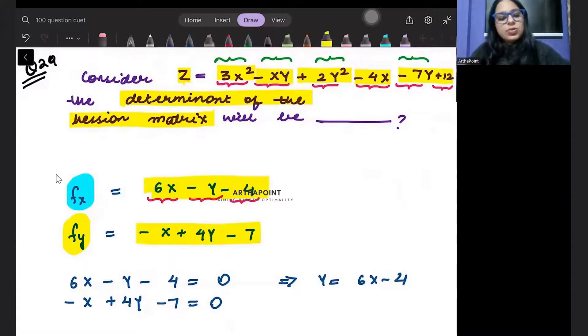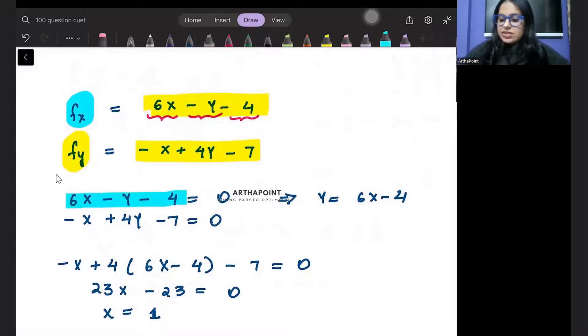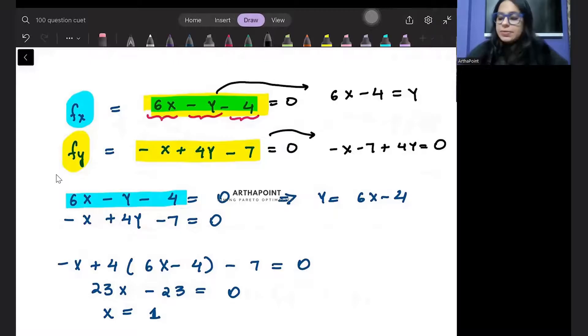Now there are two equations, two variables. So we must solve them simultaneously. From the first equation, 6x minus y minus 4, but a first order derivative we equate to 0 for maximum minima. So from here, I will get 6x minus 4 is equal to y if I find y's value by equating it to 0. And from here I will get minus x minus 7 plus 4y equal to 0. But y's value is 6x minus 4.